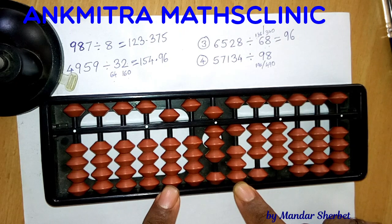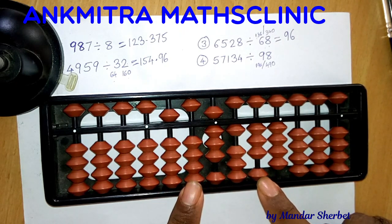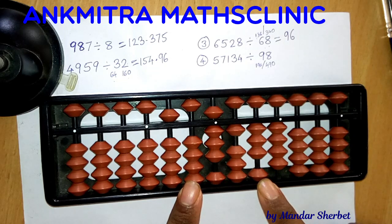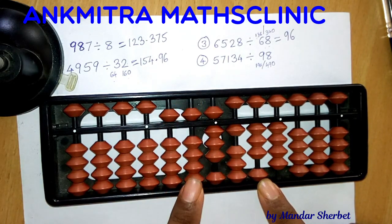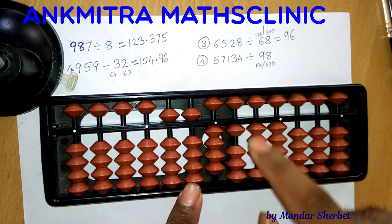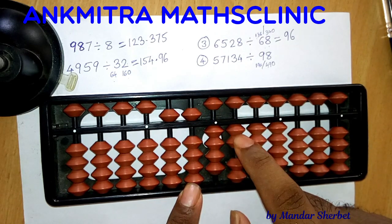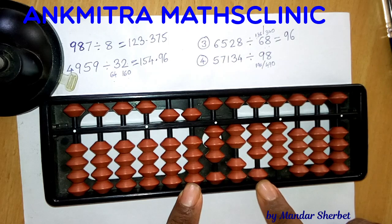Whenever we find a number smaller than our divisor, we move to the next rod. Moving to the next rod for both the question and answer set, we now have 813. From 813 we can subtract 5 times 98, which is 490. I'll take 5 on the answer set for this rod, then subtract 490: plus 1 minus 5 for subtracting 4, plus 1 minus 10 for subtracting 9, and nothing for 0. We're left with 323.